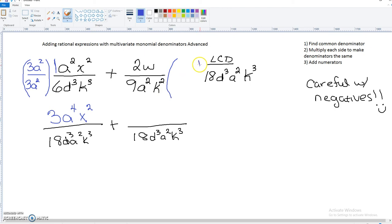Now over here, we need to figure out what's missing to multiply. In order to make 9 into 18, we need to multiply it by 2. It already has the a². But it doesn't have the d cubed.